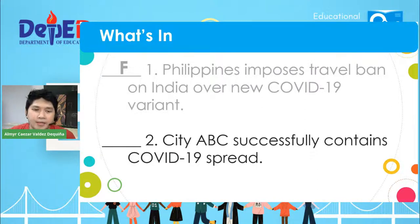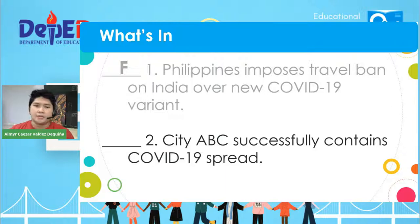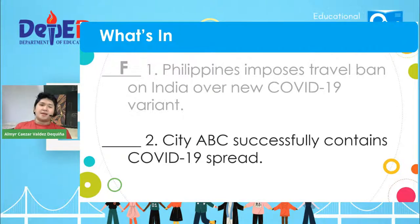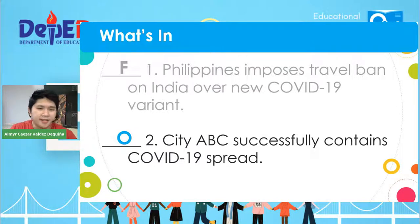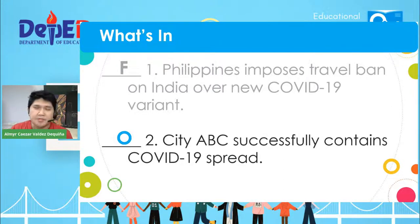Item number two: City ABC successfully contains COVID-19 spread. The correct answer for this one is letter O — this is an opinion. Why is it an opinion? To say that it has successfully contained a COVID-19 spread is difficult to prove. There might be some people who say it's not successful, while others might say it is. So in a way, this statement is an opinion.